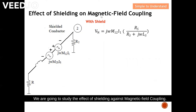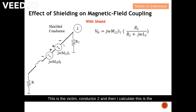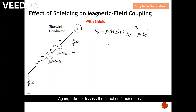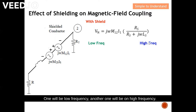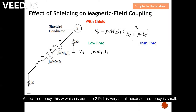In the A series, I derived this equation. This is the victim conductor 2, and I calculated the amount of noise that couples over from conductor 1 to conductor 2 with the shielding effect. I'd like to discuss the effect on two outcomes: one will be at low frequency and the other at high frequency. Let's take a close look at low frequency first.